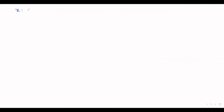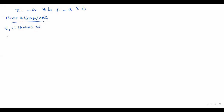Consider one example represented in quadruple form. Suppose the input statement is: x = -a * b + -a * b. The same expression discussed in the previous session. The first step is to generate three address code. Using temporary variables: t1 = unary minus a.